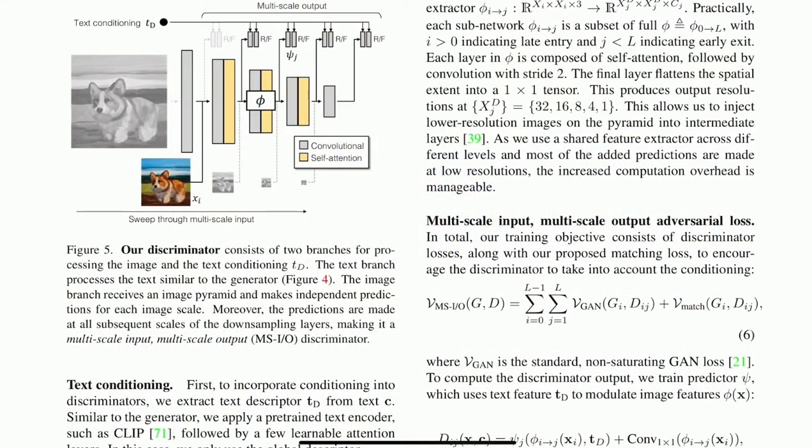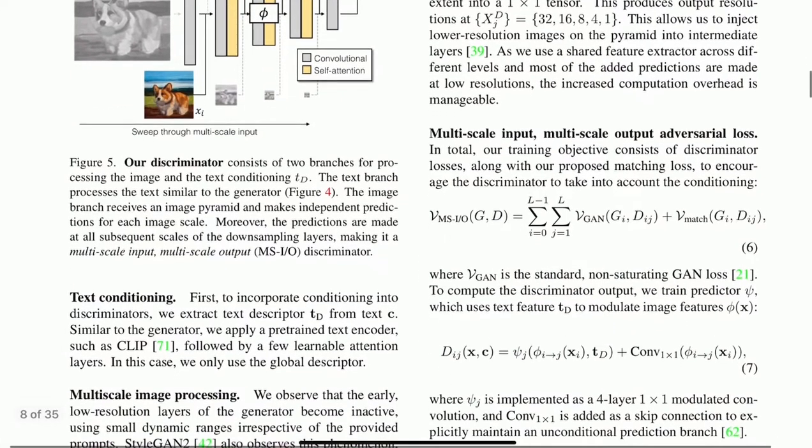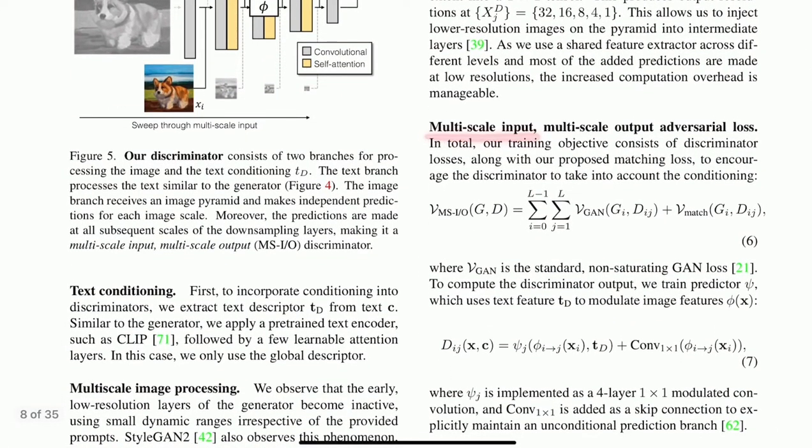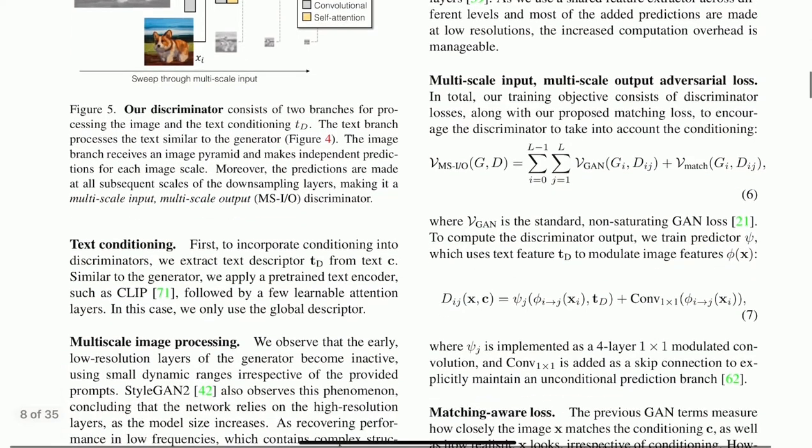So let's talk now about the losses to train this network. They have three losses to train it. The first one is the multi-scale input, multi-scale output adversarial loss. It is composed of two sub-losses: the GAN and the match-aware loss. The GAN loss is the standard non-saturating GAN loss. So nothing new here.